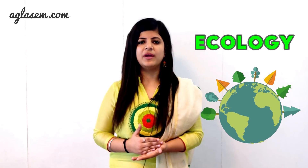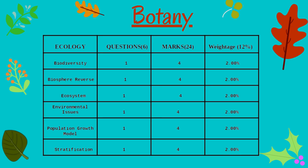The first unit covers around 24 marks — that is Ecology. In Ecology, there are six topics that carry equal weightage. Refer the table on your screen for the topic-wise marks distribution. The unit name is Ecology, with a total of 6 questions and marks weightage of 24. The important topics are: Biodiversity (1 question, 4 marks), Biosphere Reserve (1 question, 4 marks), Ecosystem (1 question, 4 marks), Environmental Issues (1 question, 4 marks), Population Growth Model (1 question, 4 marks), and Stratification (1 question, 4 marks).